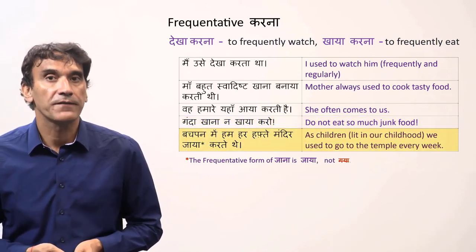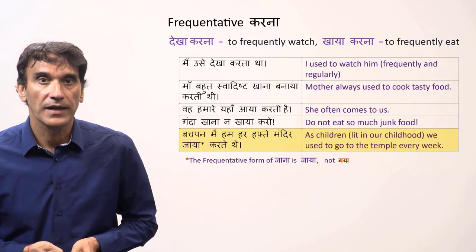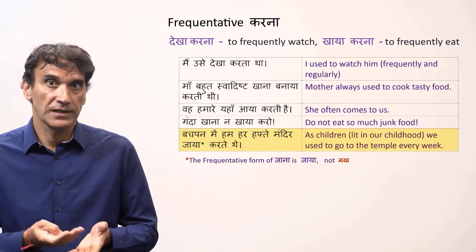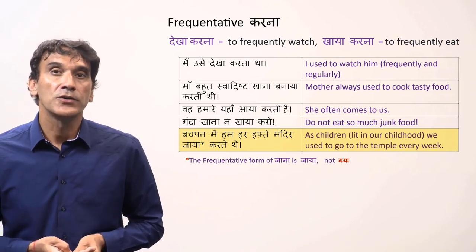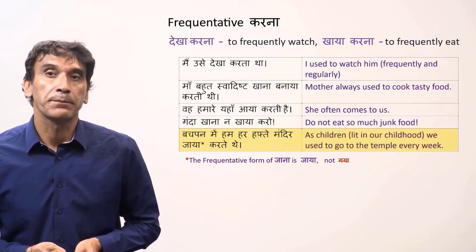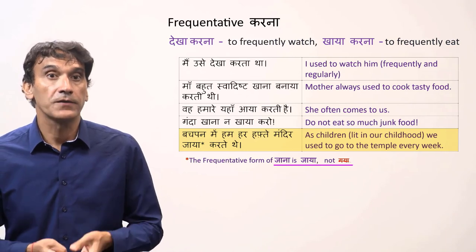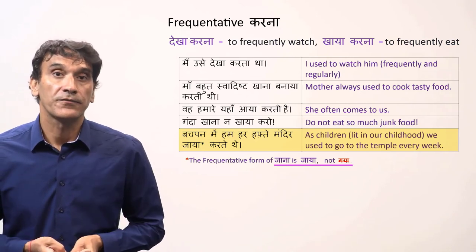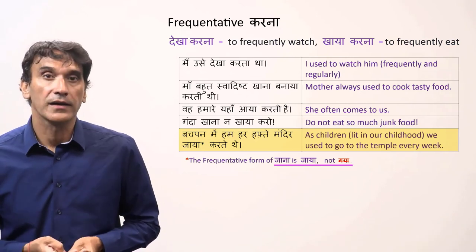Bachpan mein hum har hafte mandir jaya karte the — As children, literally in our childhood, we used to go to the temple every week. Note that for the verb jana, the form is jaya karna, not gaya karna.